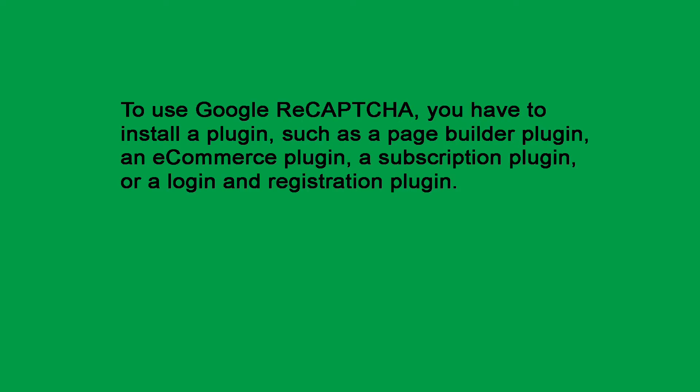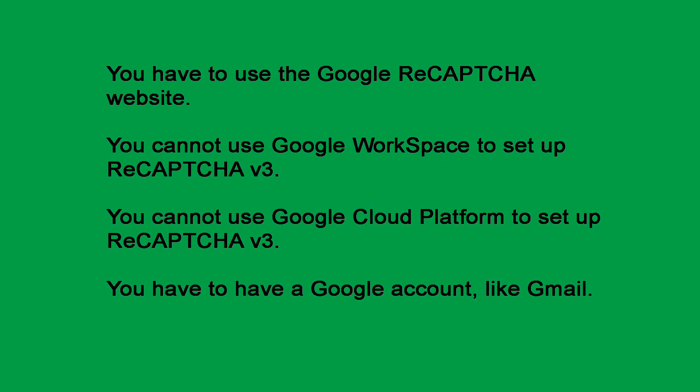There is no place in WordPress that will allow you to run Google ReCAPTCHA on your website natively. To use Google ReCAPTCHA, you have to install a plugin, such as a page builder plugin, an e-commerce plugin, a subscription plugin, or a login and registration plugin. Plus, unless you are a developer or a programmer, to set up Google ReCAPTCHA you have to use the Google ReCAPTCHA website. You cannot use Google Workspace to set up ReCAPTCHA v3.